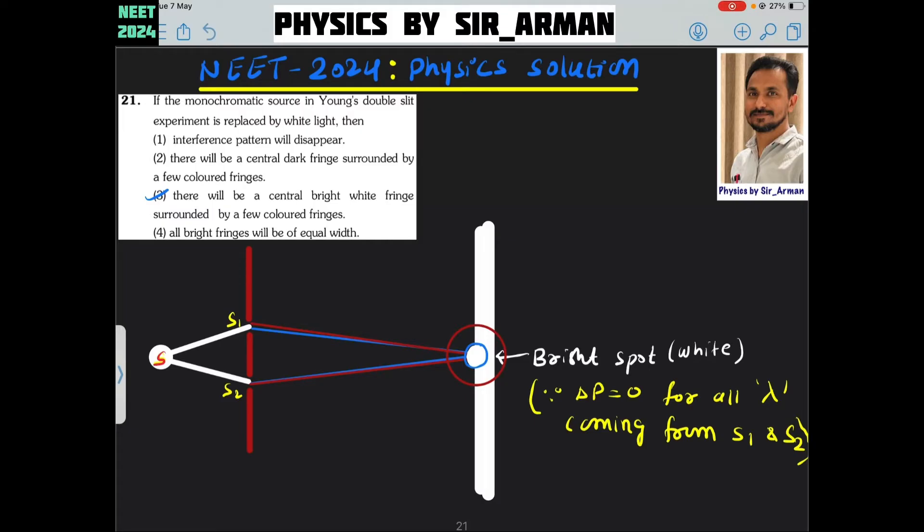Monochromatic means single wavelength. Let us assume if you have a red light, then you will observe red and dark fringes. If you have yellow light, you will observe yellow, then no fringe means dark, then yellow, then dark, then yellow. So, alternate yellow and dark fringes are observed.